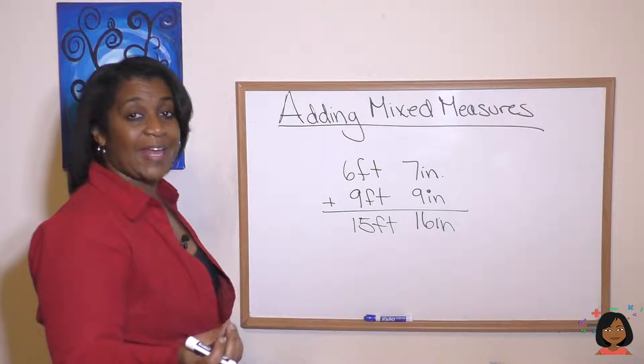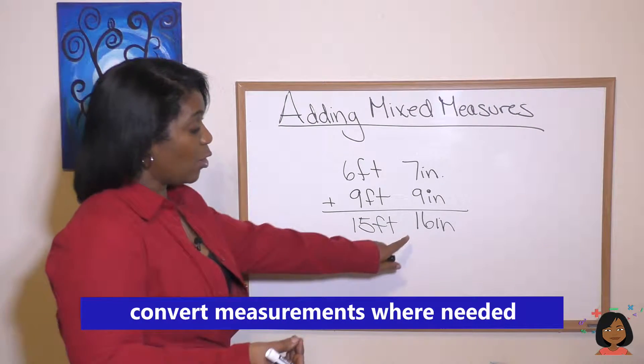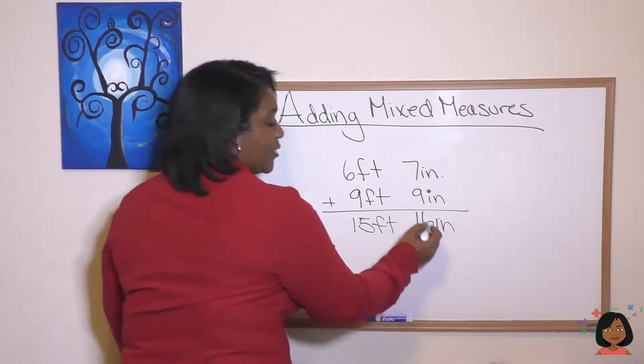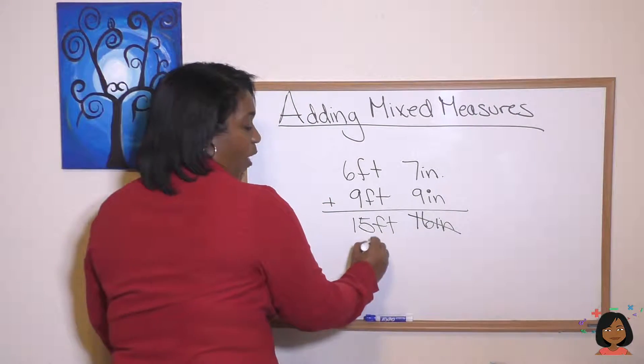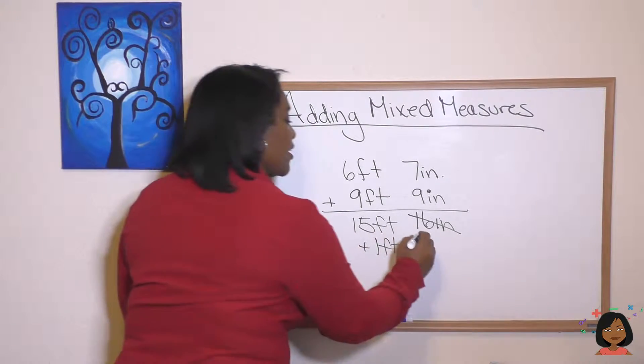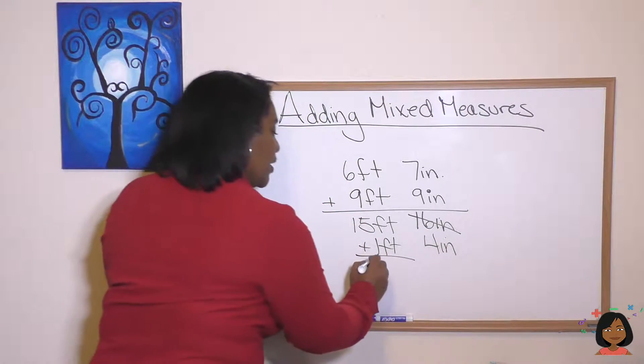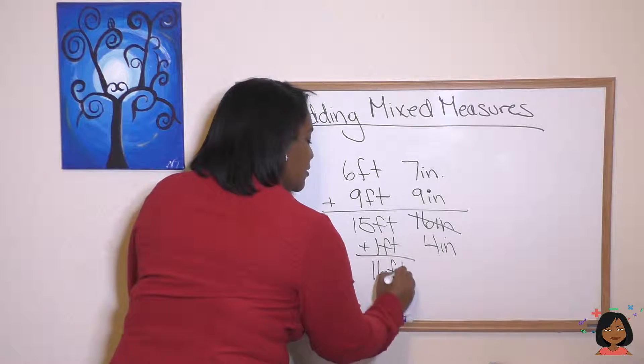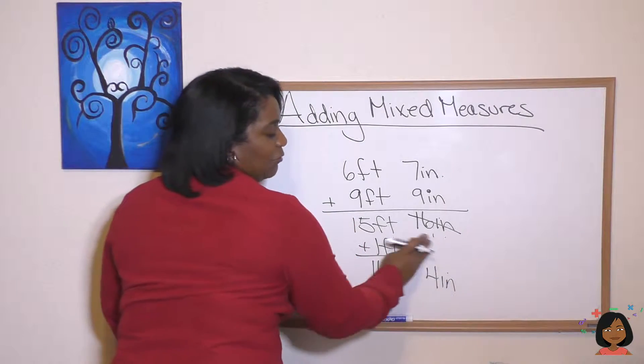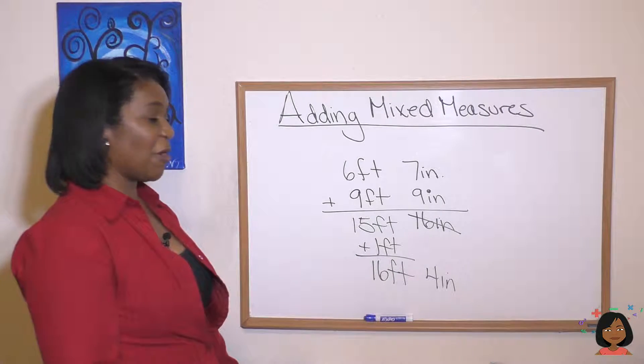Now we look at our lowest measurement and we know that we can do some conversions there. We know that 12 inches equals one foot. So we can cross out this 16. We're going to bring over one foot here and what's going to be left over. We still have four inches left over and we add that one foot over here to the 15. We get 16 feet and I'm just going to bring it down four inches. So I want to get rid of that so it doesn't look like you're adding it, but there you go. 16 feet, four inches.